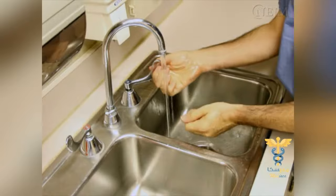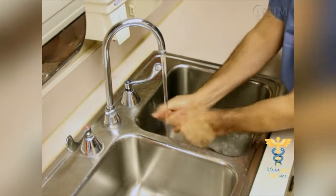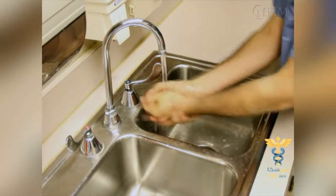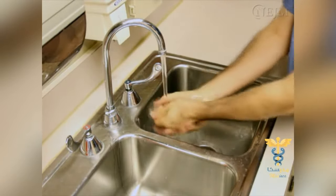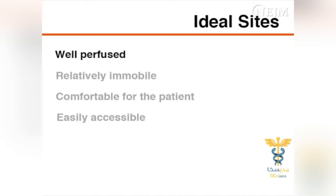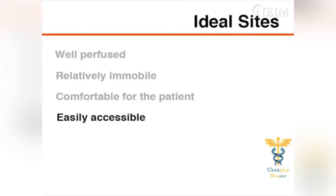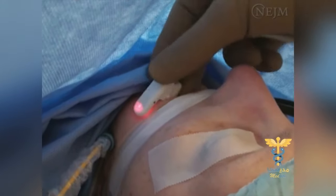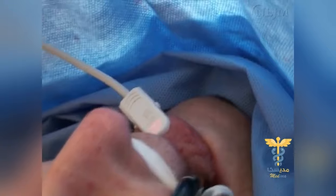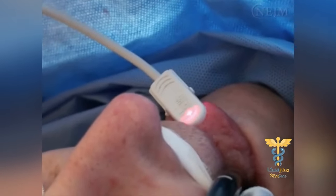It is important to adhere to standard precautions before any contact with patients. Handwashing is the single most effective strategy to prevent the spread of infections. The ideal site for placement of the pulse oximeter probe is one that is well perfused, relatively immobile, comfortable for the patient, and easily accessible. The earlobes and the fingers are commonly used sites. Feet, cheeks, nose, and tongue may be used in cases of low peripheral perfusion.